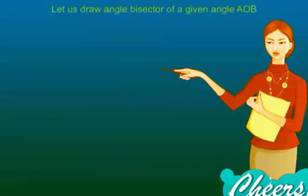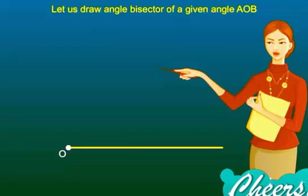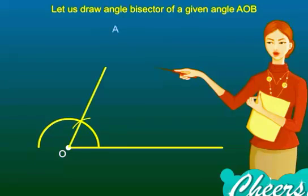Let us draw the angle bisector of a given angle AOB. Step 1: With O as center, draw a semicircle that cuts both rays of the angle AOB at C and D respectively.